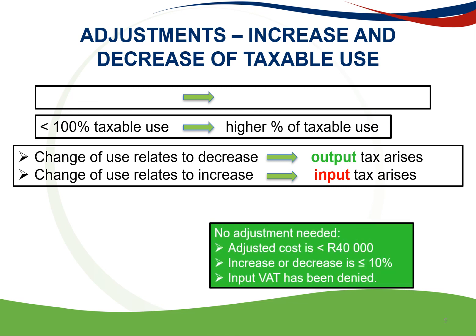No adjustment needs to be made when the adjusted cost of capital goods or services is less than 40,000 Rand, the increase or decrease is equal to or less than 10%, or the input tax has been denied in terms of the VAT Act, for example motor vehicles or entertainment assets. This adjustment is usually only made at the end of the year of assessment. However, if a vendor ceases to be a vendor prior to the end of the year of assessment, the adjustment will be required immediately before that vendor ceases to be a vendor.